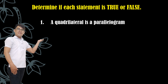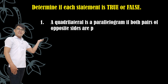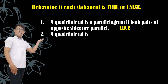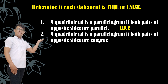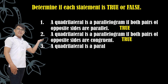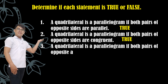Number one: a quadrilateral is a parallelogram if both pairs of opposite sides are parallel. The answer is true. Number two: a quadrilateral is a parallelogram if both pairs of opposite sides are congruent. True. Number three: a quadrilateral is a parallelogram if both pairs of opposite angles are congruent. True.